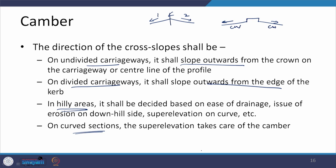On curved sections, superelevation is designed as part of the horizontal alignment, and it takes care of the camber because it also involves raising the surface with respect to the inner and outer edges of the carriageway. These aspects will be discussed further when we take up superelevation.